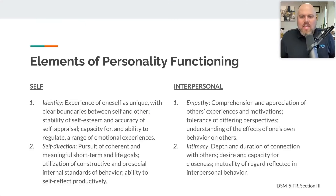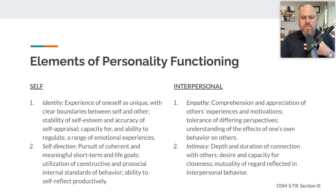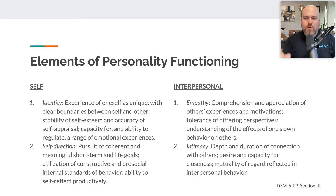This slide here shows how an optimally functioning personality works. There are elements that deal with one's internal self and elements that deal with the interpersonal dimension of the person — the intra, within one person dimension, and the interpersonal — and there are two for each.